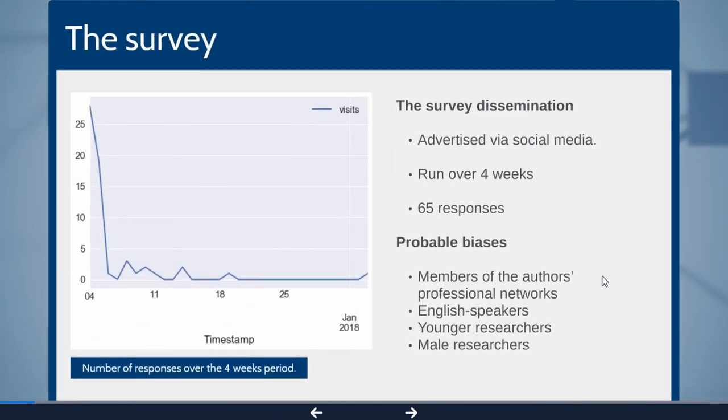We were interested in who are agent-based modelers in archaeology, so we ran a survey. We advertised it really badly because we mostly used social media. We ran it over four weeks and got 65 responses, most of which came in the first week, which kind of made the rest of the time worthless. There are obvious biases to the survey.